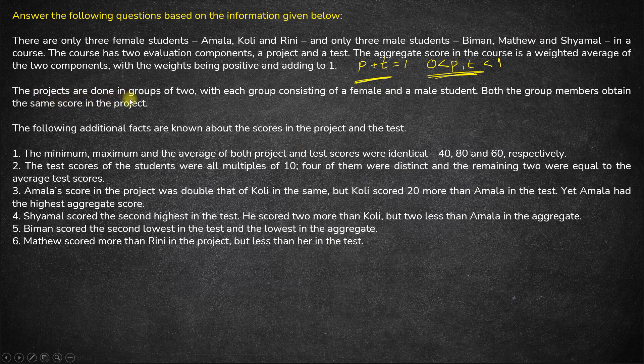The projects are done in groups of two, with each group consisting of a female and a male student, and both group members obtain the same score in the project. There are six people total, so there will be three teams doing the project. Each team has two members — a male and a female — and whatever score a particular group gets, both its members will have the same score. For example, if a team gets 20, both the male and the female will get 20 marks.